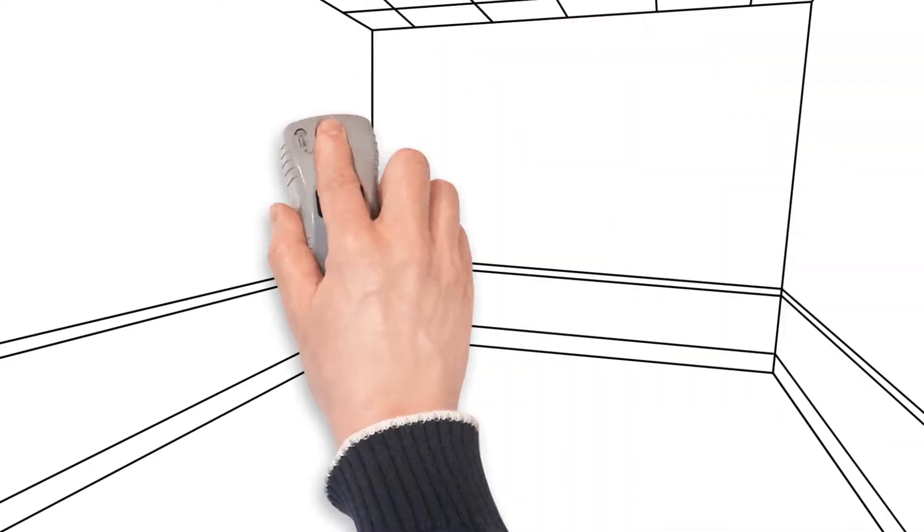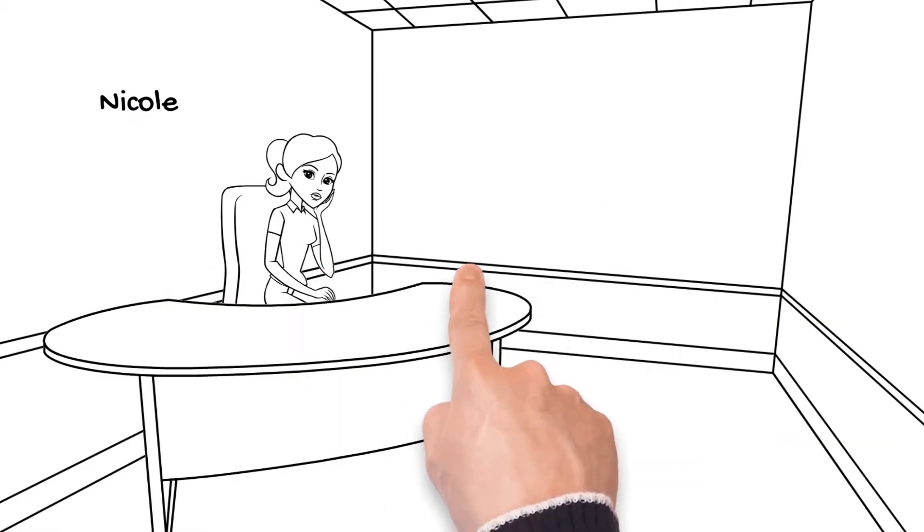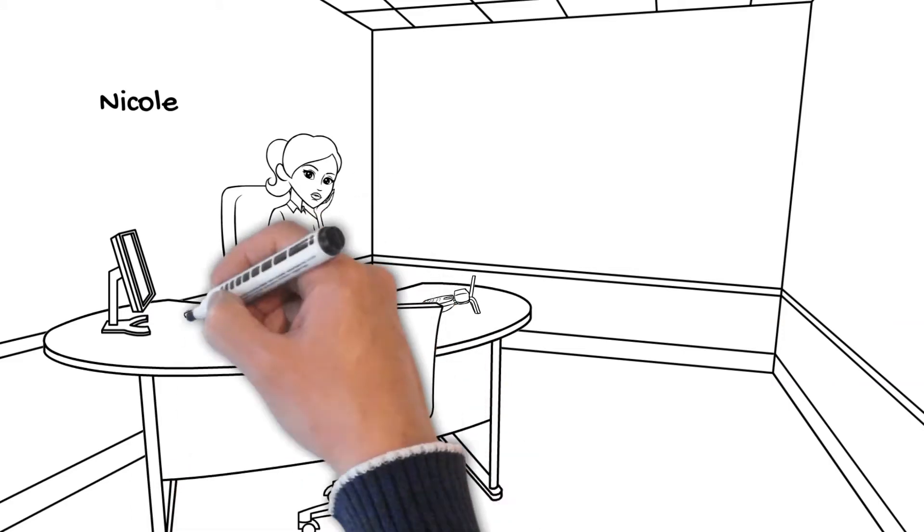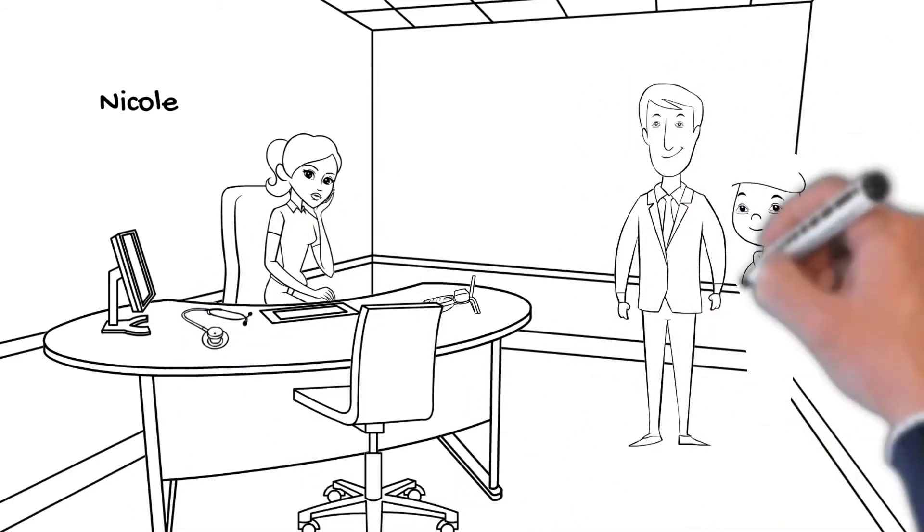Let's take the example of Nicole to understand the indicators in a better way. Nicole, a prominent employee at an MNC in her late 40s, noted for her energy and productivity, was unexpectedly fired by her boss for a younger employee.